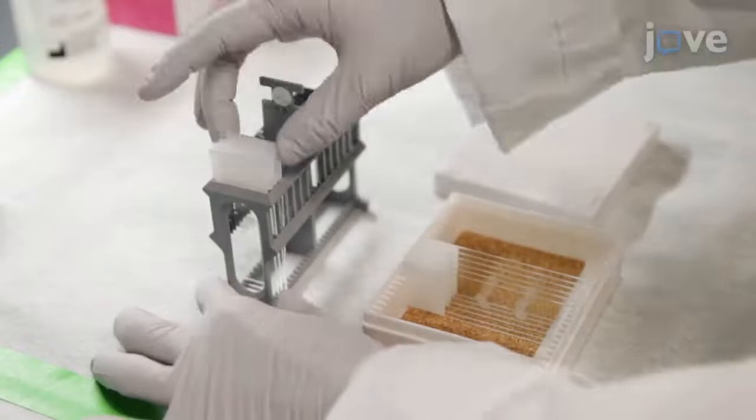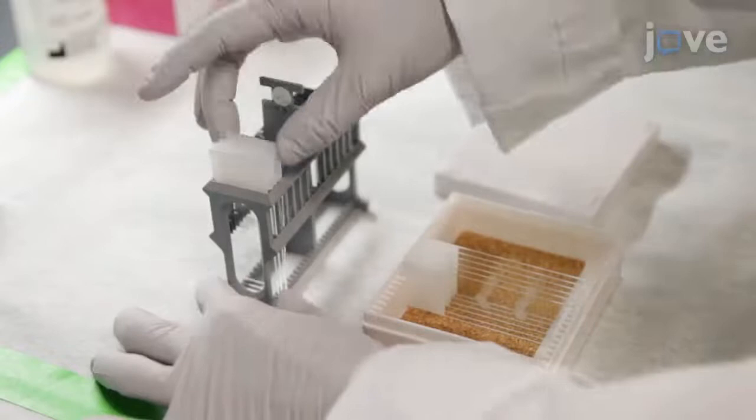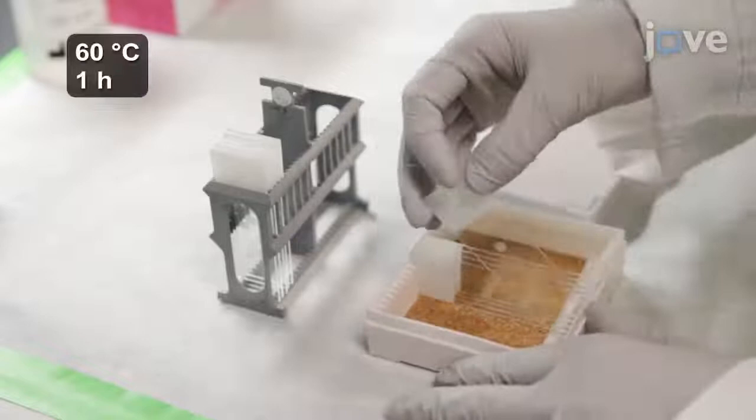One hour before performing the RNA in-situ hybridization assay, place the mounted tissue slides in a slide rack and bake in a circulating air oven at 60 degrees Celsius.